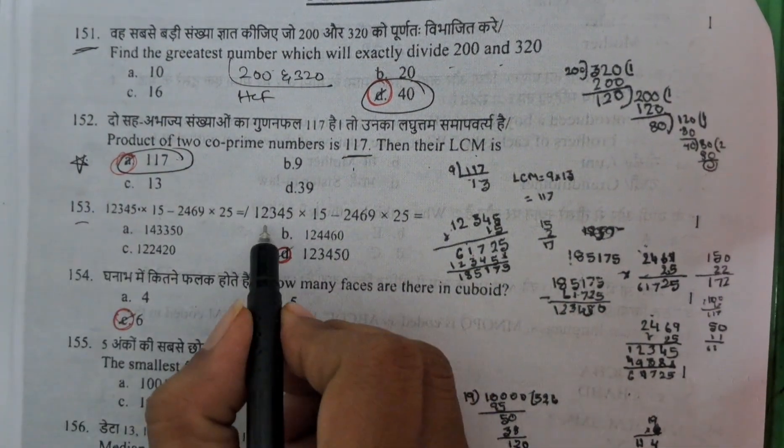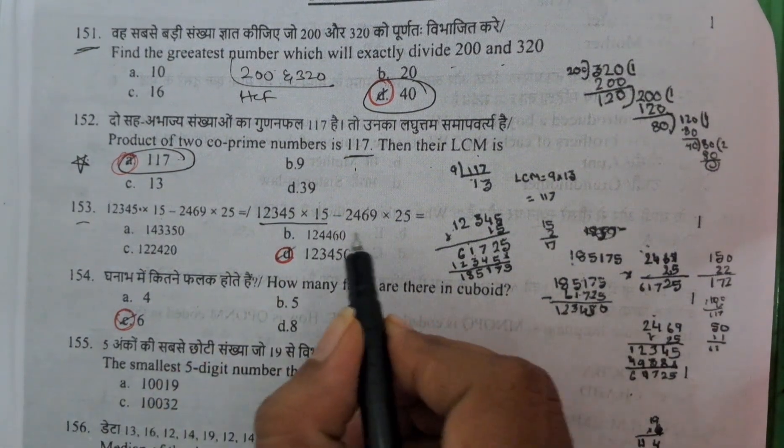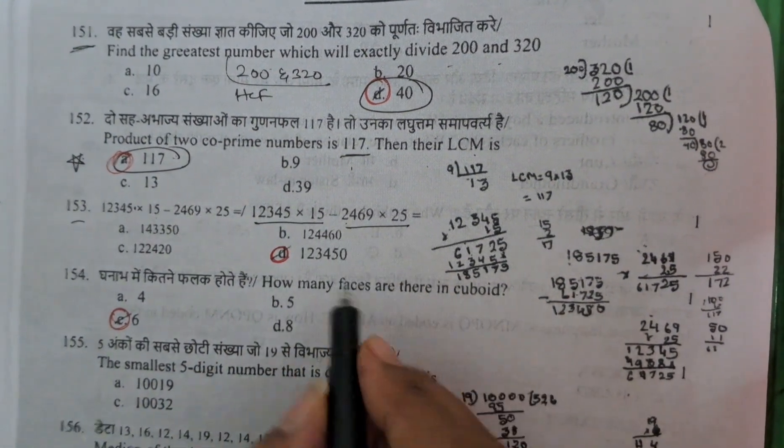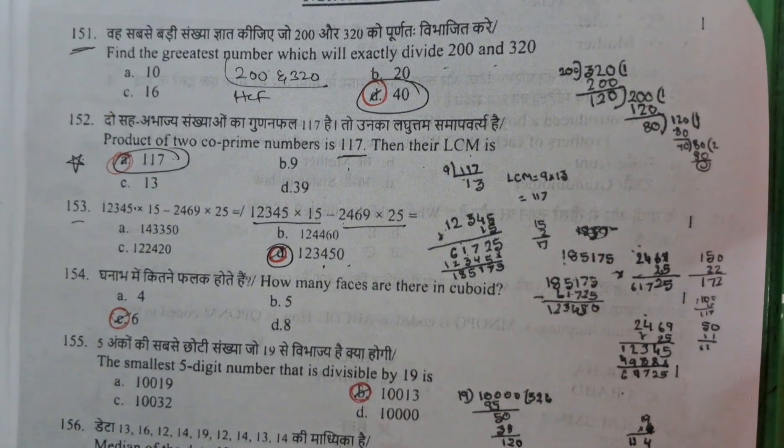This is one type of tricky question. We need to think about the question. The product of 2 prime numbers, 117. Co-primes which is not divisible by same number, that is co-primes. Then their LCM is also their product only. Means the answer is 117.